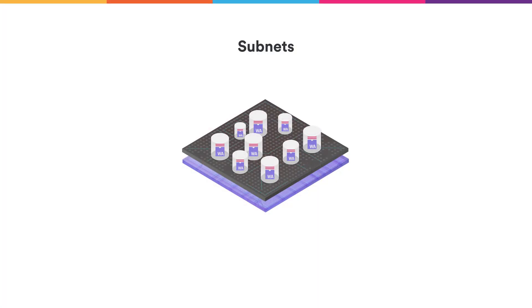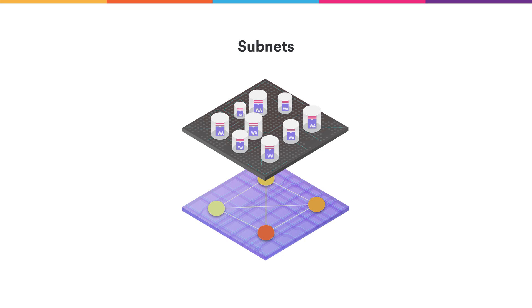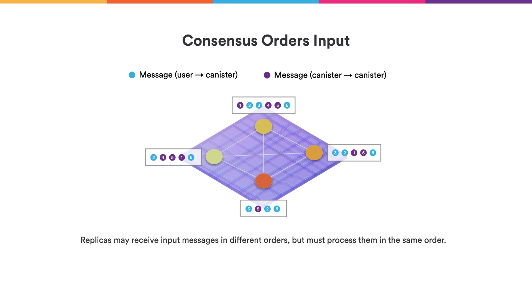If we zoom into a single subnet, this is where we want to get the security and reliability. We do that by a process called replication. Instead of having a single machine power a subnet, many machines across the world will power a subnet. Each of them will have the state of all the canisters that run on the subnet, and each will process all the changes that come in. This approach of using replication to gain security requires a consensus protocol.